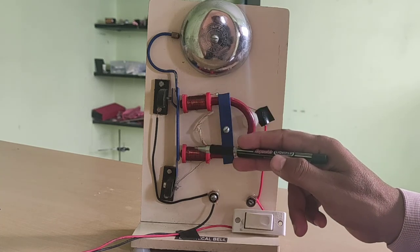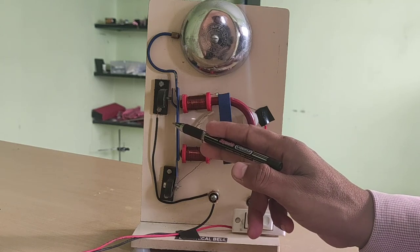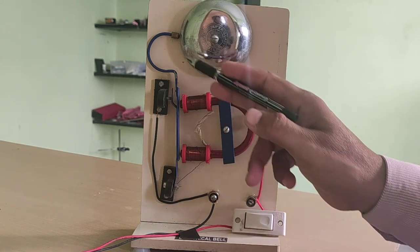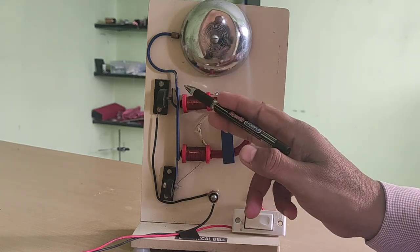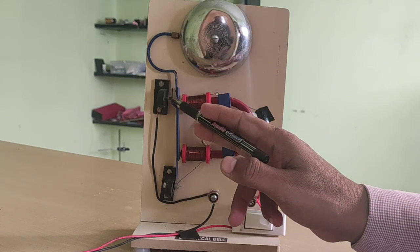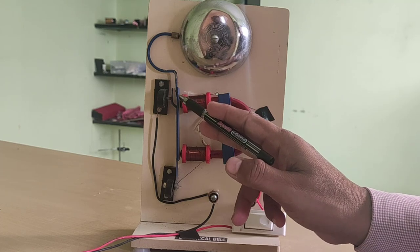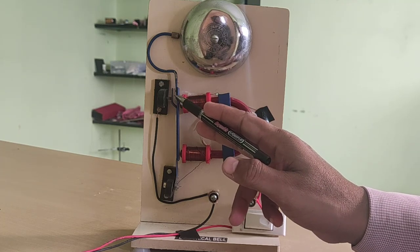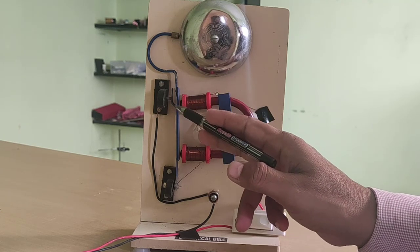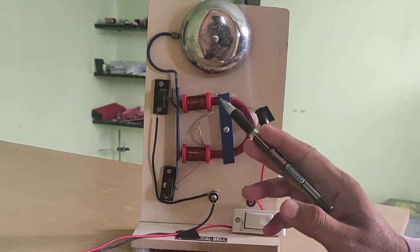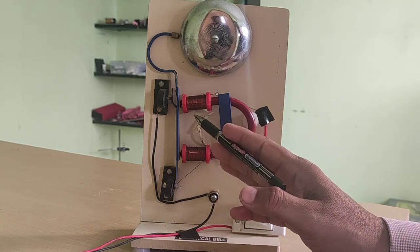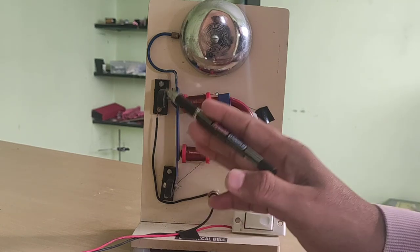And when it becomes an electromagnet, this iron strip gets attracted towards it and this hammer strikes on this gong. But at the same time a gap is created between this iron strip and contact screw, means the circuit breaks and current stops flowing, means this coil is no more an electromagnet and this iron strip moves back.